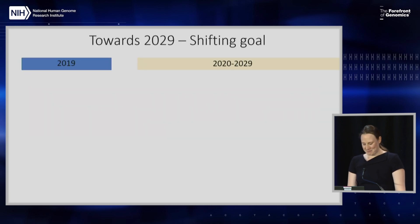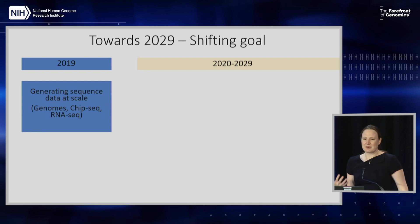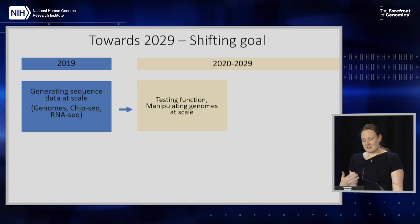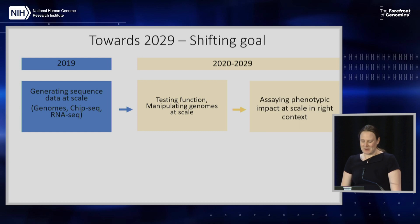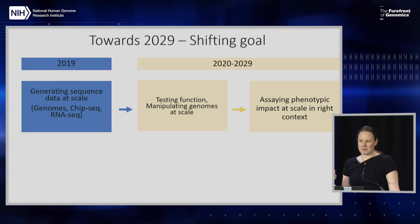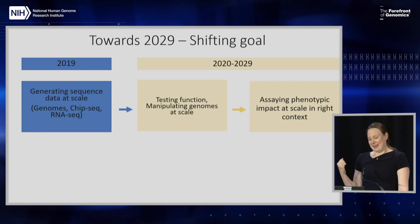In 2019, we're generating sequence data at massive scale to analyse genomes — Chip-seq, RNA-seq. We really need to be doing functional testing at the same scale to work out what regulatory elements are truly regulatory elements. We need to be manipulating genomes at scale — manipulating millions if not billions of variants. And we need to be assessing the phenotypic impact at scale, which will be really challenging. We need to harness technologies to work out how changes in sequence are impacting phenotype, with automated image analysis combined with sequencing, all done at scale and in the right biological context.